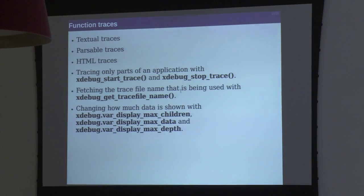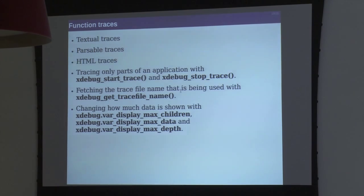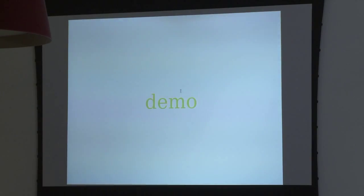It is possible to only trace parts of the application by using functions called xdebug_start_trace() and xdebug_stop_trace(). You can configure how much variable information is included. The traces are actually quite good, but they are in a tab-delimited text format that is difficult for tools to parse. So there are actually a few other trace format types you can use.